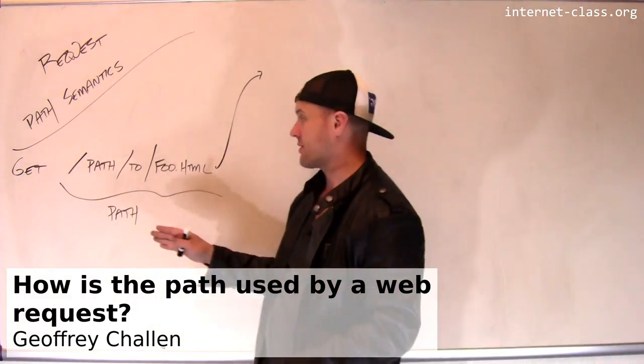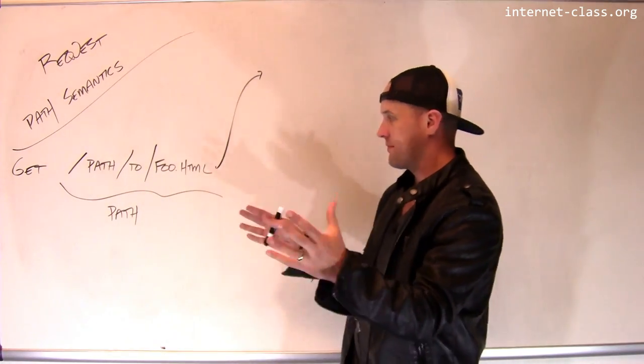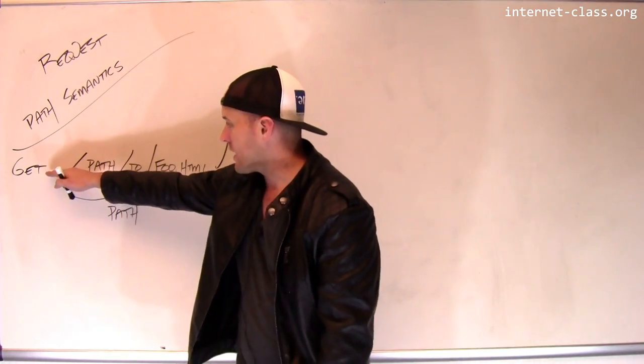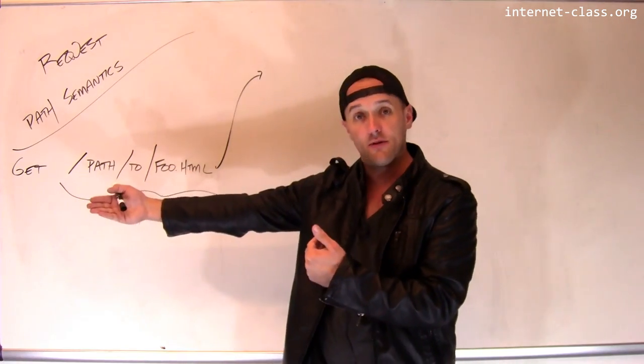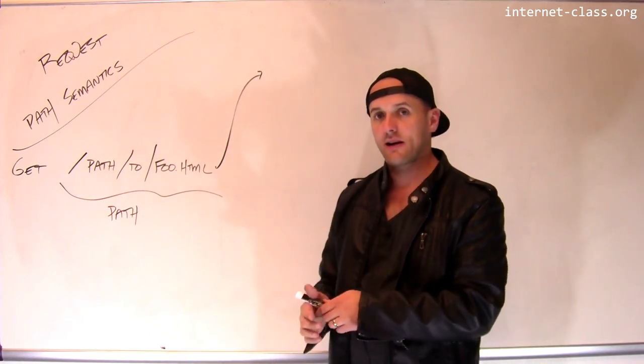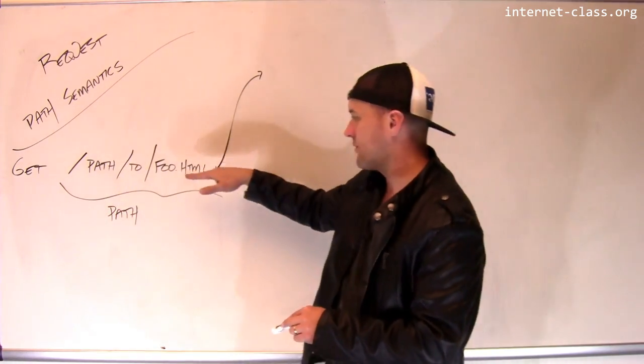If you look in the actual GET request, the server name is gone at that point, and what I'm passing to the server is whatever is to the right of the server name. So experiment.netonaclass.org slash path2foo.html.